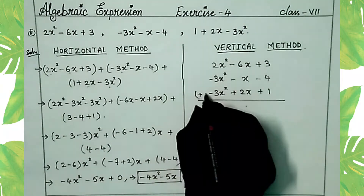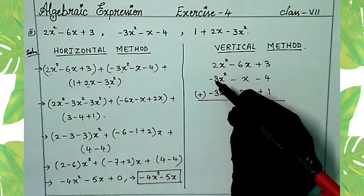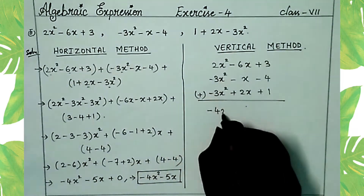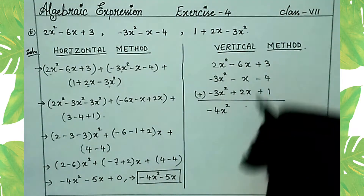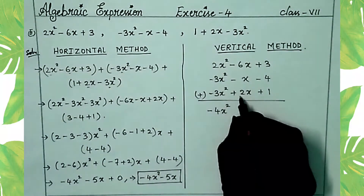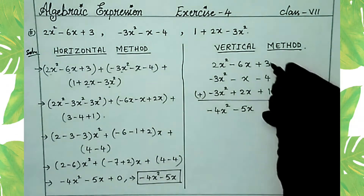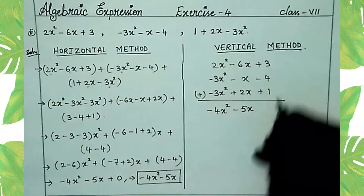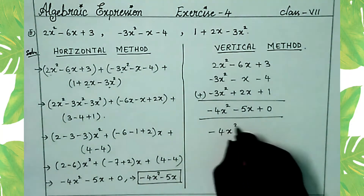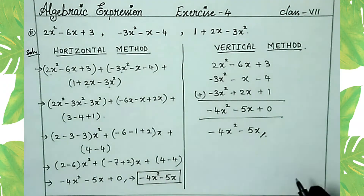Now we add each column. For x²: 2 minus 3 minus 3 equals minus 6 plus 2, giving minus 4x². For x: minus 6 minus 1 plus 2 gives minus 5x. For constants: 3 plus 1 minus 4 equals 0. So the expression is minus 4x² minus 5x.